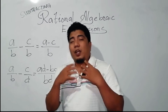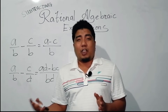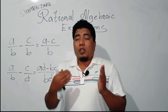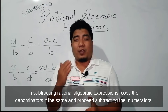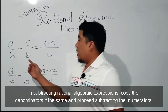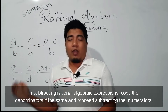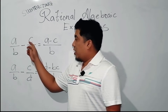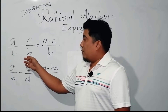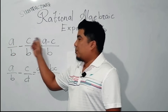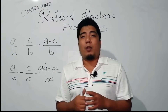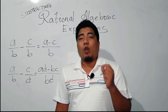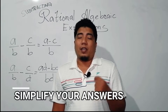Now we have here the context of the process. The same as the addition of rational algebraic expression, what we do in subtraction is that we follow the same concept. If they have the same denominators, then we copy the denominators, and then we follow the operation of the numerator. As you can see, A over B minus C over B — they have the same denominator. We copy the denominator, and then we subtract immediately the numerators. Remember also that after we finish subtracting, always try to simplify into its lowest terms.